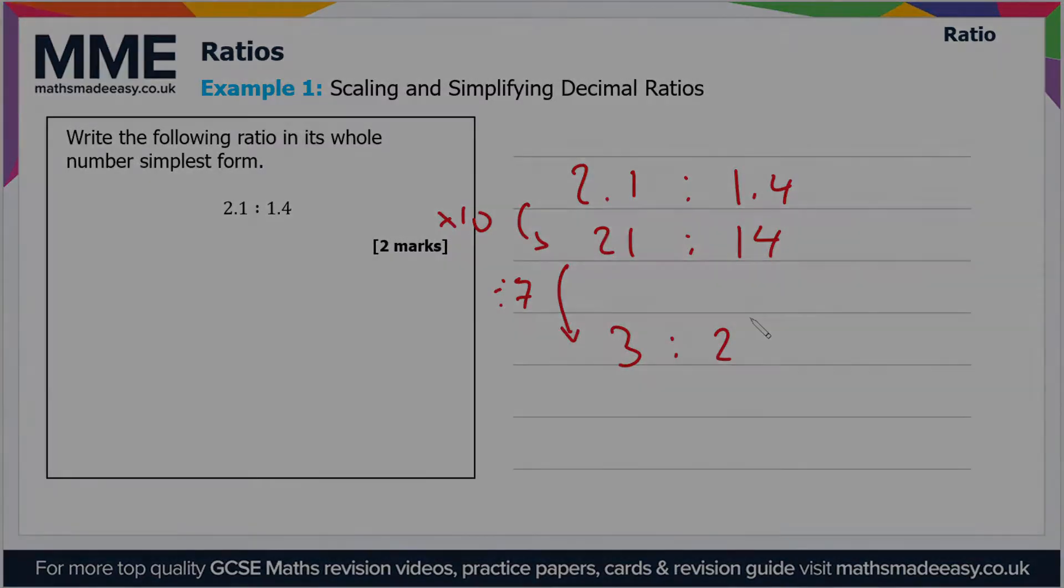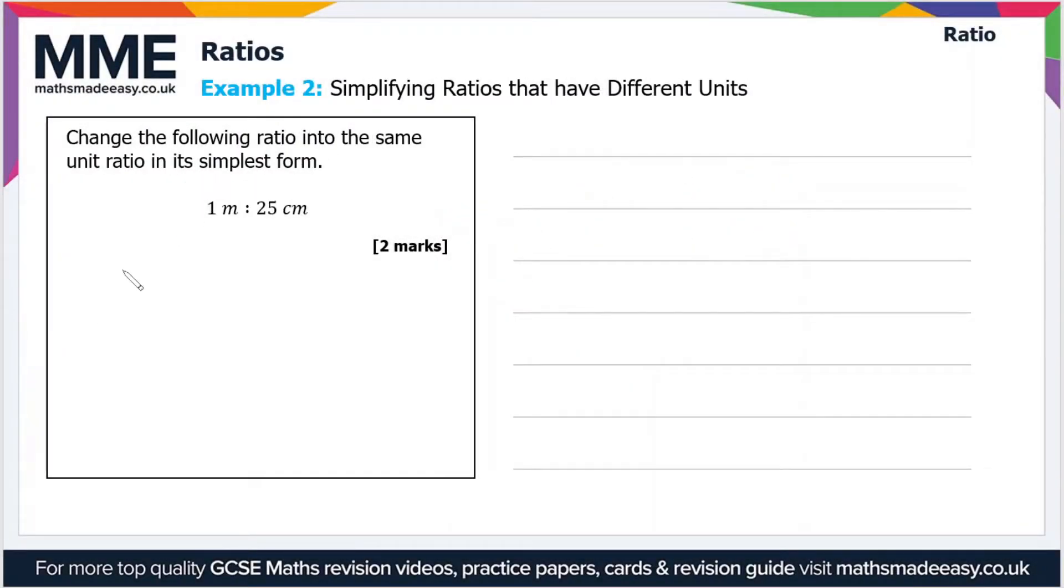So moving on then, the second example: change the following ratio into the same unit ratio in its simplest form. So what does that mean? Well if we look at the ratio we've got 1 meter to 25 centimeters. So meters and centimeters are different units, so we have to put them into the same unit and then we can simplify it.